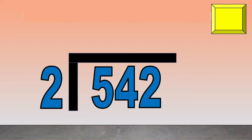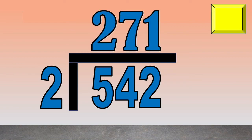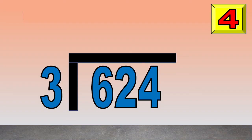Quiz time! Let's answer this — you only have 10 seconds to answer. Start now. 542 divided by 2 is equal to 271. Next: 624 divided by 3. Time's up — the answer is 208.